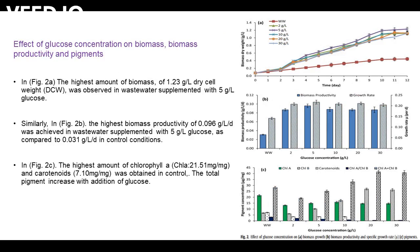In Figure 2, the effect of glucose concentration on biomass, biomass productivity, and pigment is given. In Figure 2a, the highest amount of biomass of 1.23 g dry cell weight was observed in wastewater supplemented with 5 g/L glucose. Similarly, in Figure 2b, the highest biomass productivity of 0.0196 g/L/day was achieved in wastewater supplemented with 5 g/L glucose, compared to 0.031 g/L/day in control conditions. In Figure 2c, the highest amount of chlorophyll and carotenoid was obtained in control.